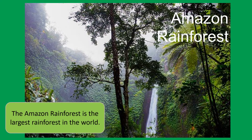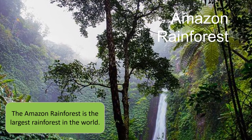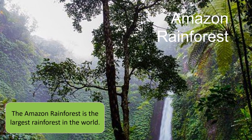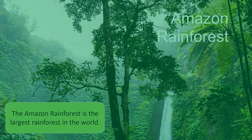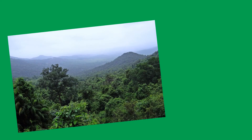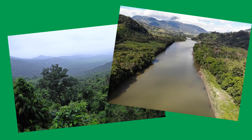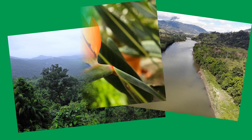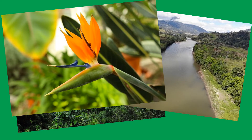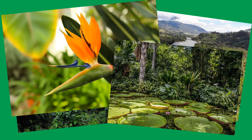The Amazon rainforest is the largest rainforest in the whole world. A combination of rain and heat makes the Amazon rainforest humid, hot and sticky. The Amazon River runs through the rainforest providing a constant source of water. A number of plants and trees grow here fighting for space and sunlight.